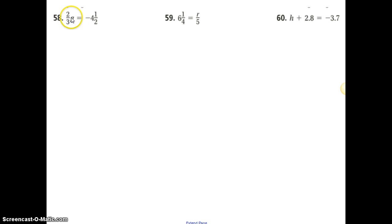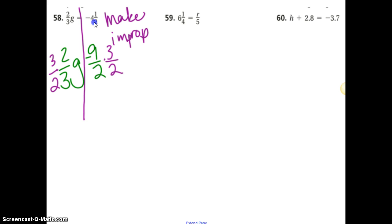These. This one, because it's multiplying, now you have to make improper first. So let's see. 4 and 1 half. Pretend the negative isn't even there because everything is negative. So 4 times 2 is 8 plus 1 is 9 halves. Is it a positive 9 halves or a negative 9 halves? Negative. So now we've got 2 thirds g. How do you undo the 2 thirds? Great. 3 halves times 3 halves.